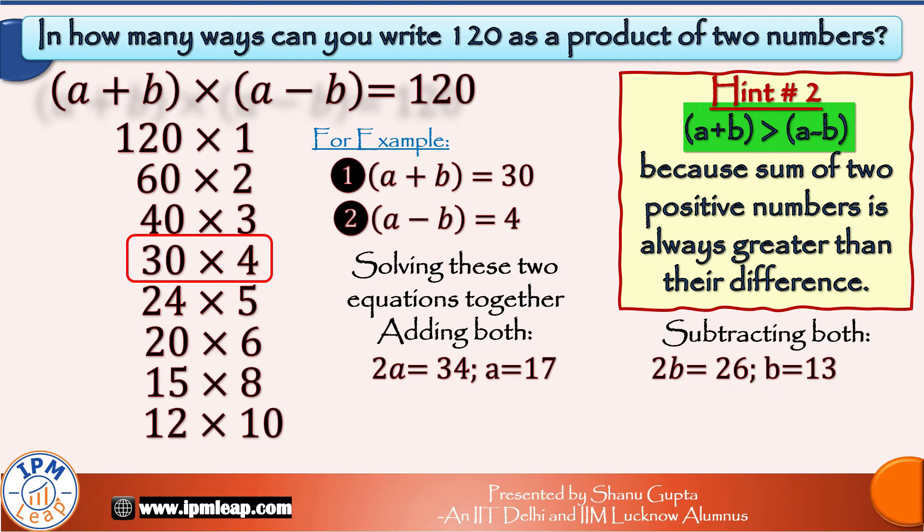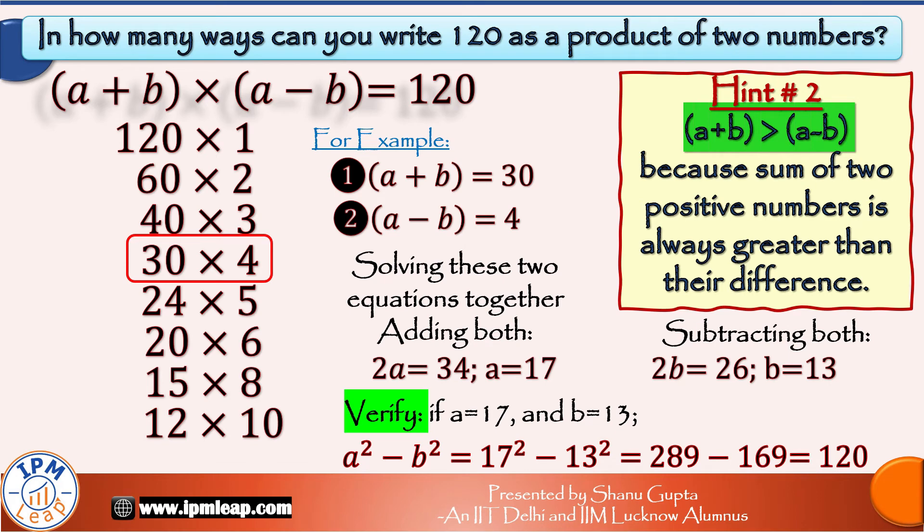Let's verify if these values of a and b satisfy our equation. Indeed, 17 square minus 13 square is equal to 289 minus 169 which is equal to 120.